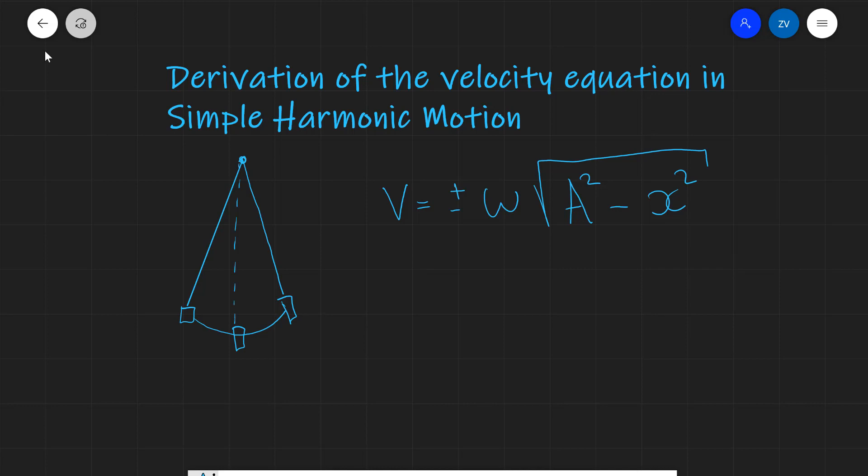Now, my question that we're going to be looking at today is where does this equation come from? We know that x is given by either A cosine omega t or x is equal to A sine omega t, depending on the initial conditions. But we don't actually know where this equation comes from. Well, let's have a go at deriving it today.